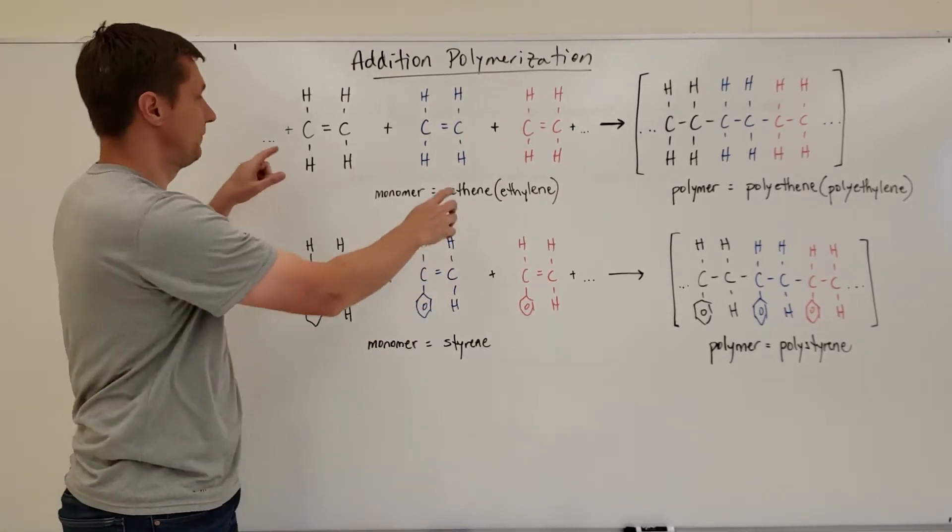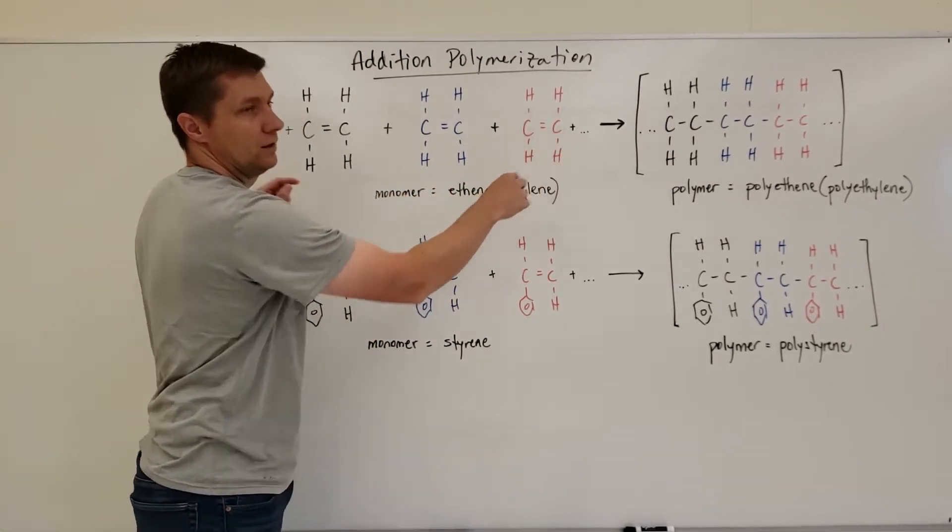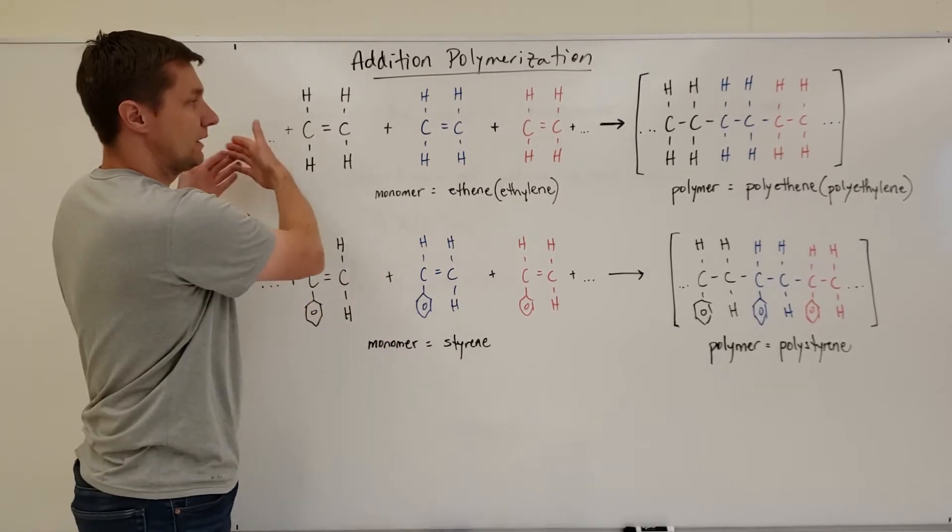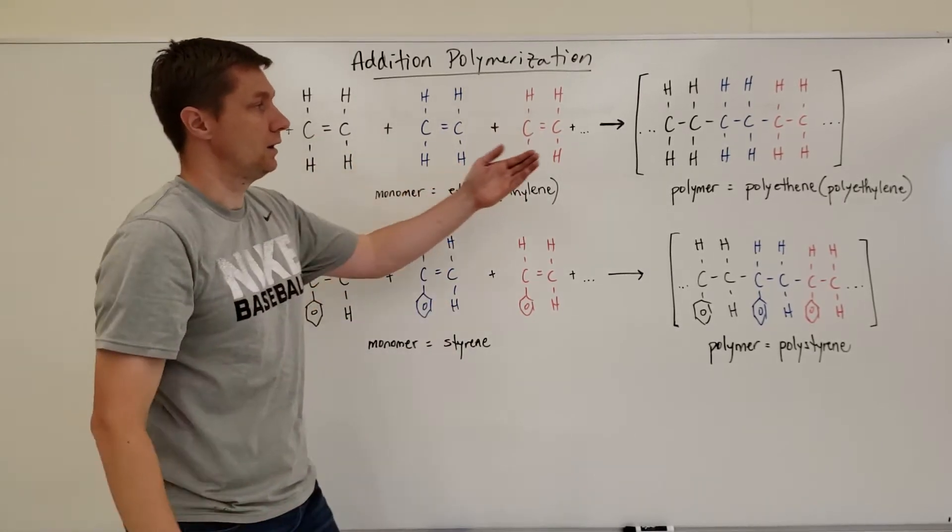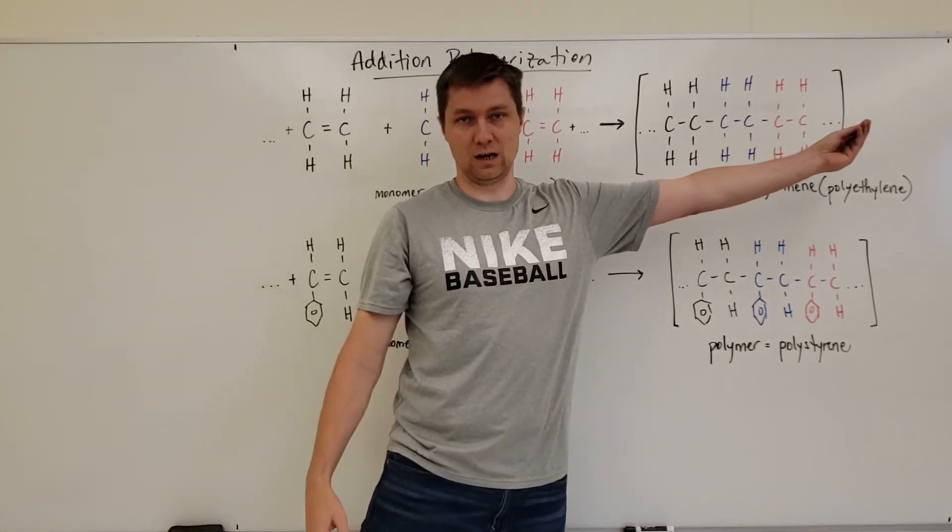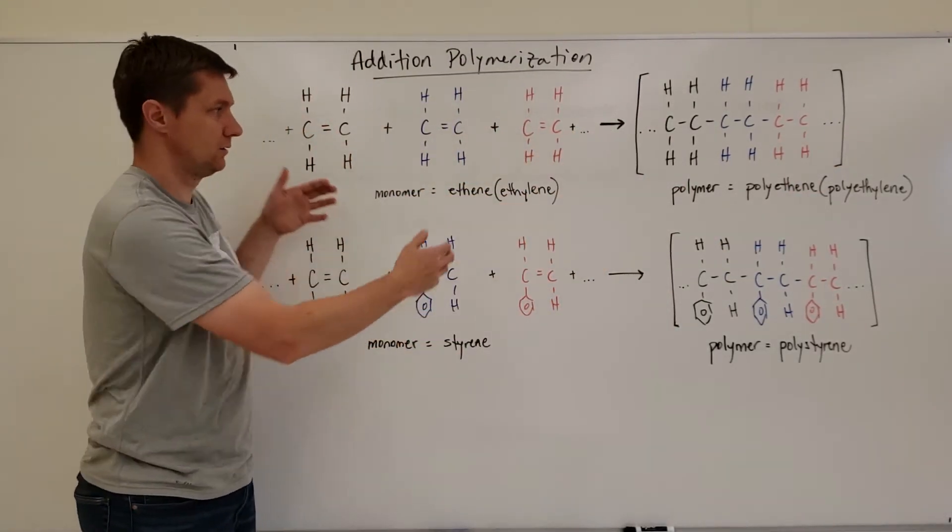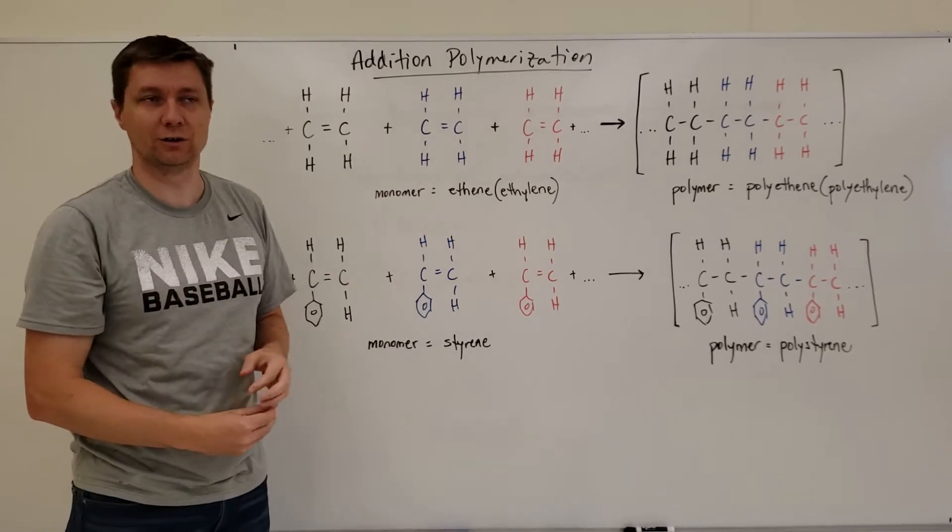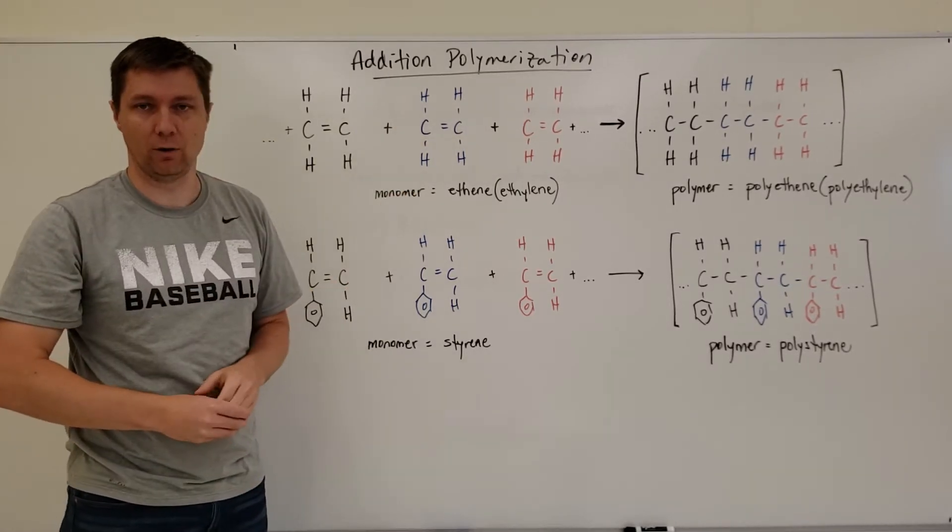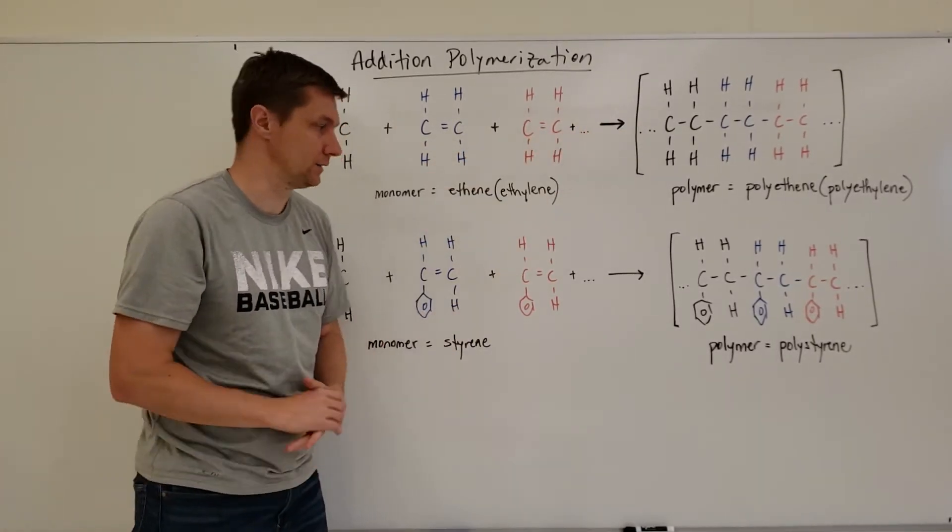Now the reason for the dots here on the side is just simply to say that however many monomers we have here is going to dictate how long that polymer is going to be. So the dot dot dot just means a continuation of however many monomers is going to be part of that.